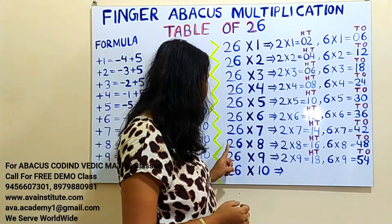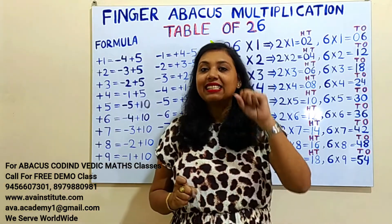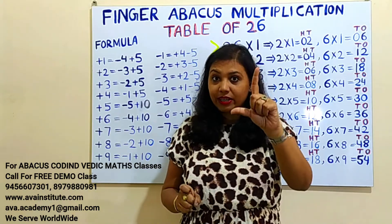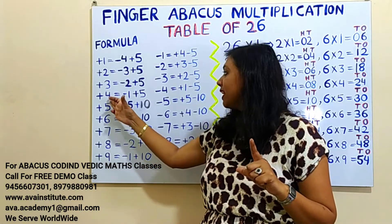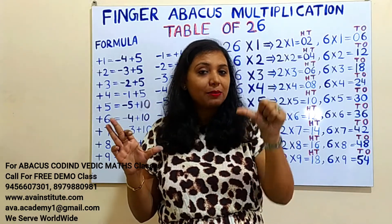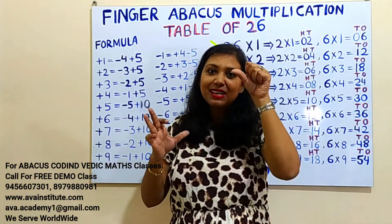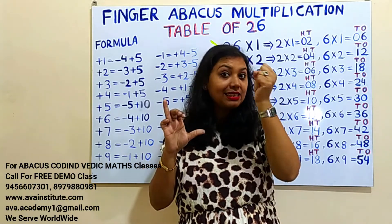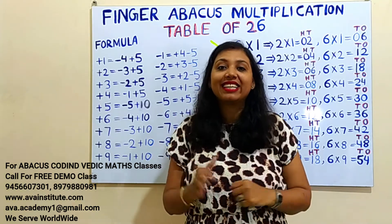26 eights are: 2 eights are 16 — in hundreds 1, in tens 6. Now 6 eights are 48 — in tens 40, in ones 8. We can add 8 easily. How to add 40? Plus 4 formula is minus 1 plus 5, so plus 40 formula is minus 10 plus 50. Now plus 50 is not possible because it is already open, so plus 5 formula is minus 5 plus 10, meaning plus 50 formula is minus 50 plus 100. Hundreds: 100, 200. Tens: 0. Ones: 5, 6, 7, 8. The answer is 208.